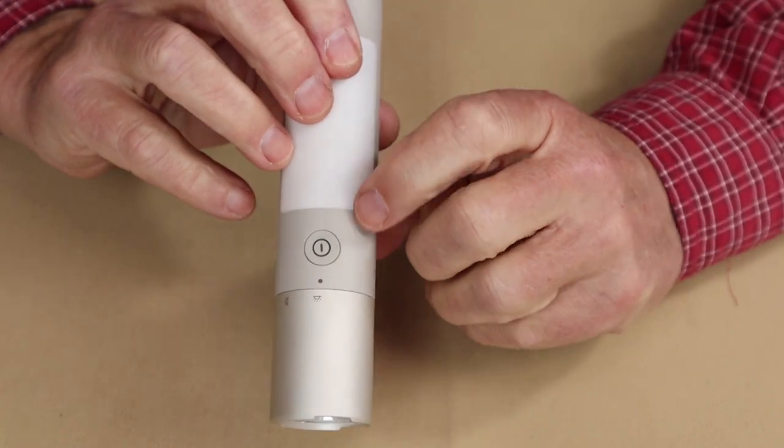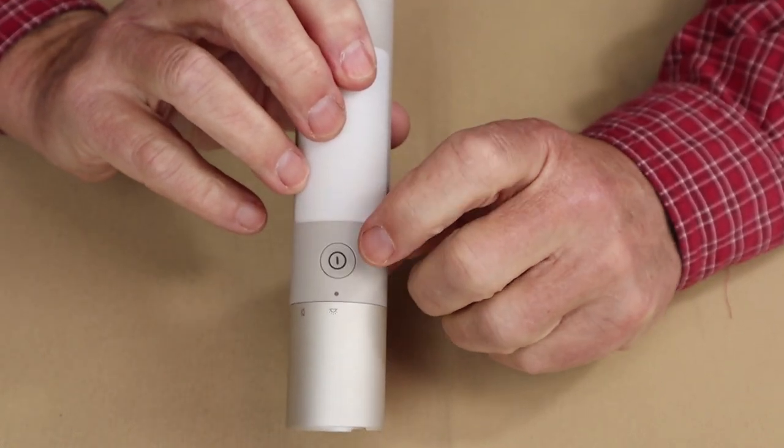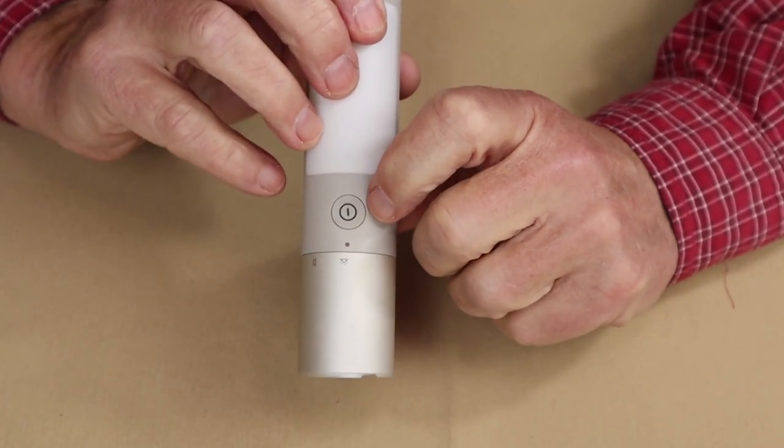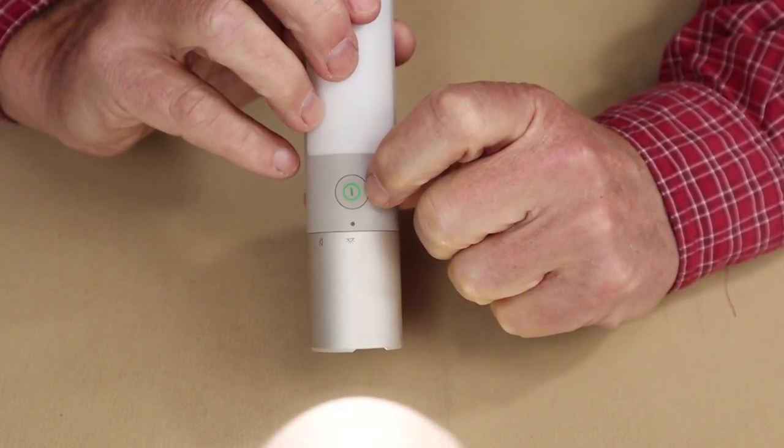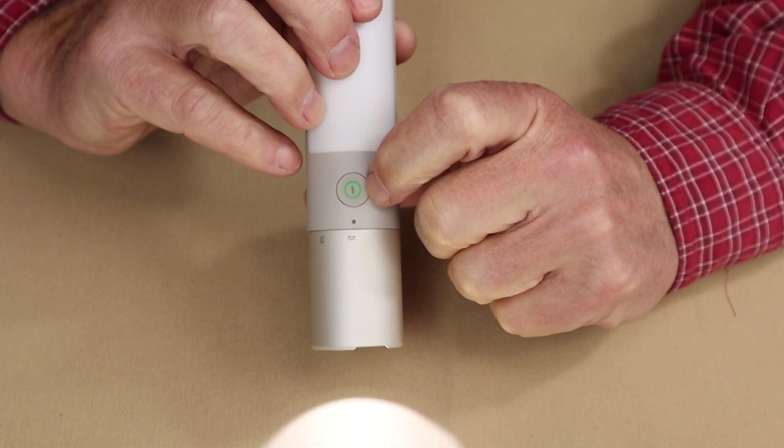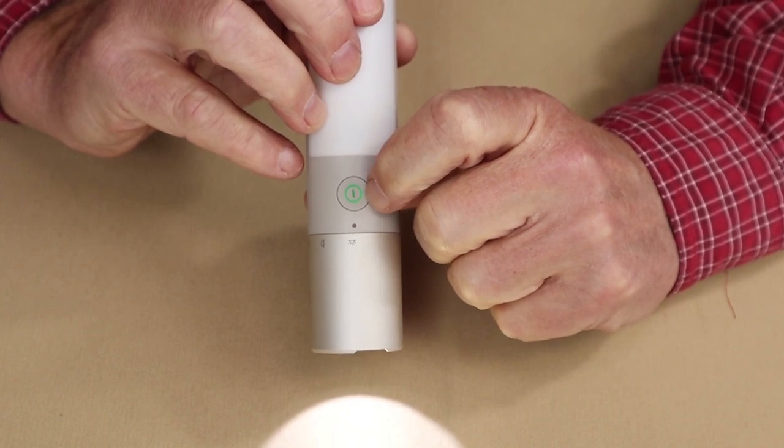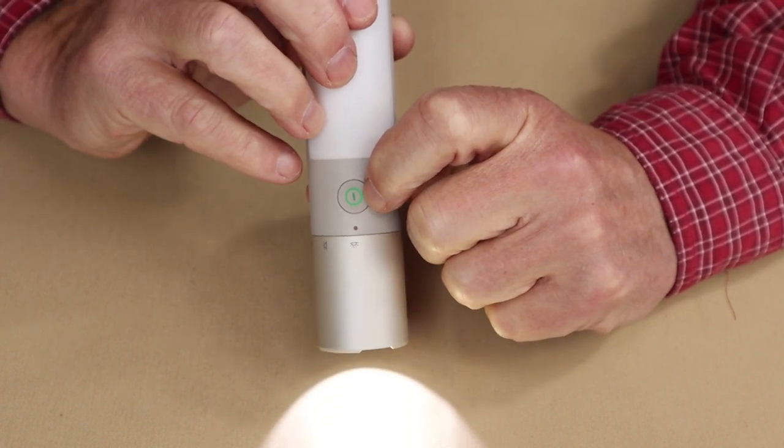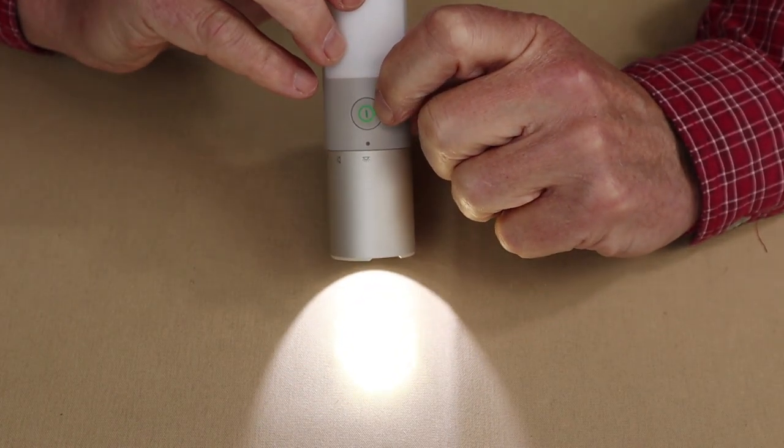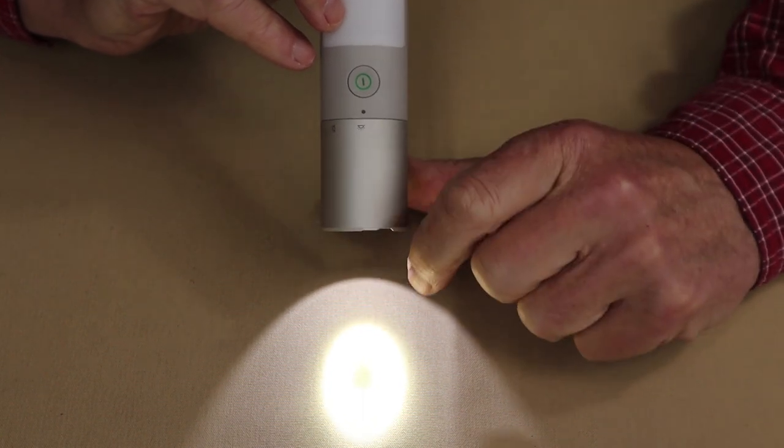Now you turn the light on and off simply enough with the button right here. And when you turn it on you'll notice right away that the button itself does indicate green, and that's a battery strength indicator. So it'll run from green to red to flashing red. So when it gets to red or flashing red you'll know it's time to recharge the light.